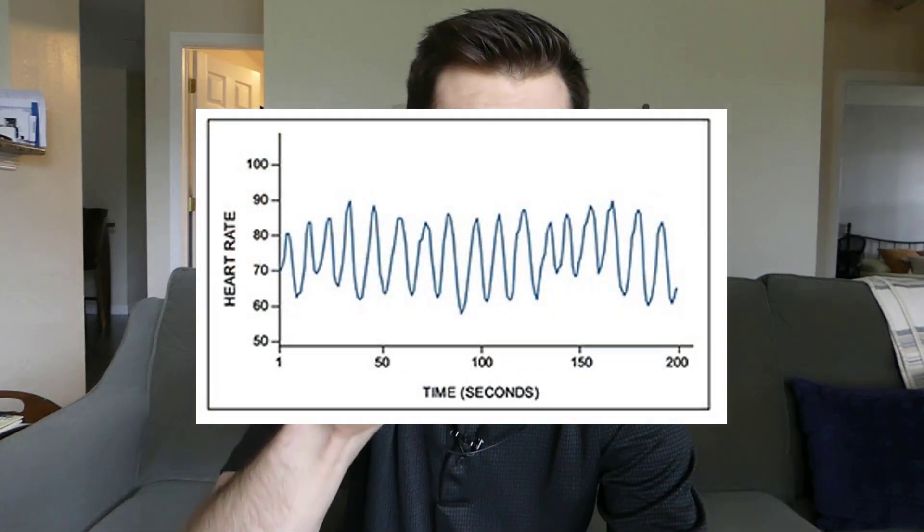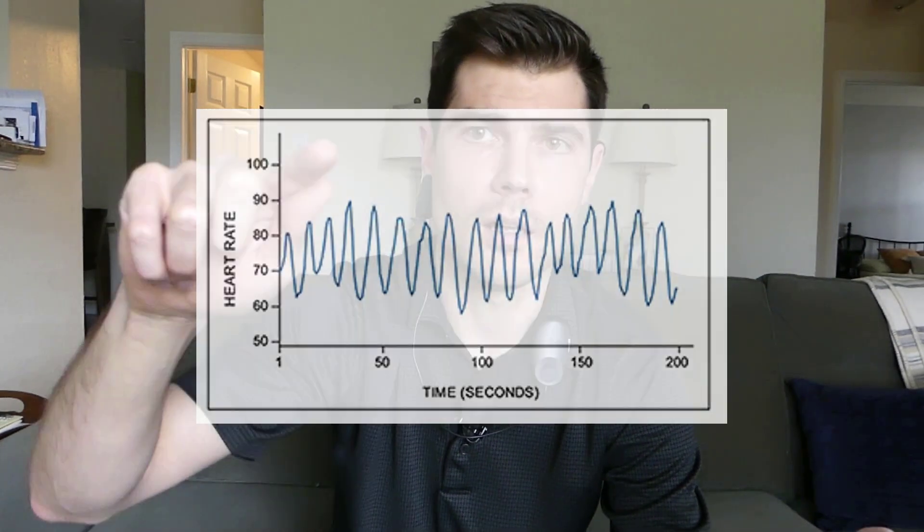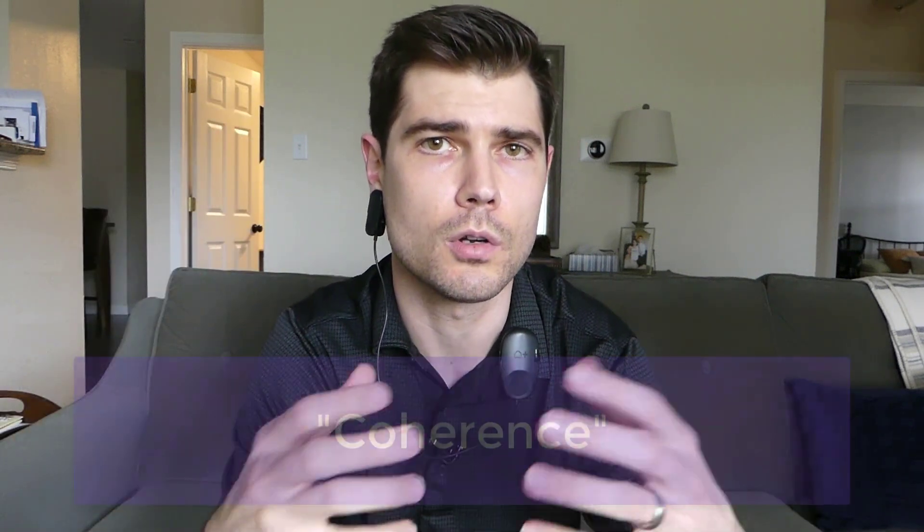But when you're really calm, relaxed, and present-minded, and your stress levels are really low, your heart rate looks totally opposite. It takes on this smooth and rhythmic pattern of speeding up and slowing down. Essentially, if you can get your breathing and your heart rate in sync with each other so that as you inhale your heart rate speeds up, and as you exhale your heart rate slows down, it'll take on this smooth and rhythmic pattern that some people call coherence.